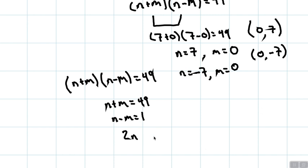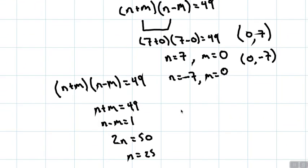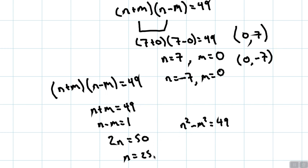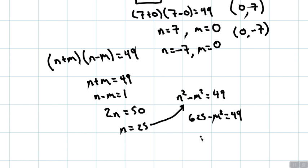625 and so going back to the equation n squared minus m squared equals 49, we plug this 25 in here. 625 minus m squared is equal to 49. Then we can solve for m squared. m squared is going to be 576. And there we get m is equal to 24.